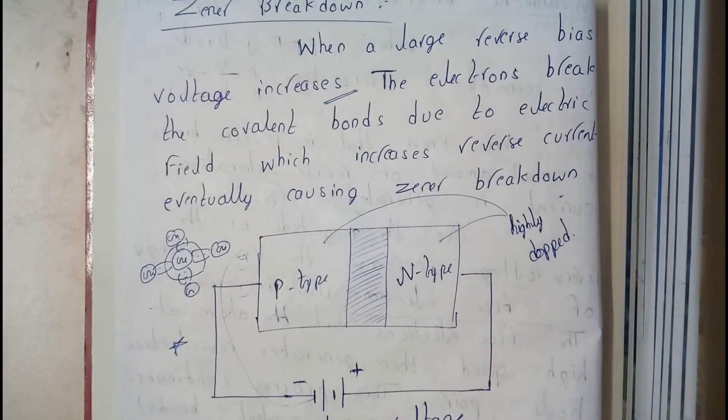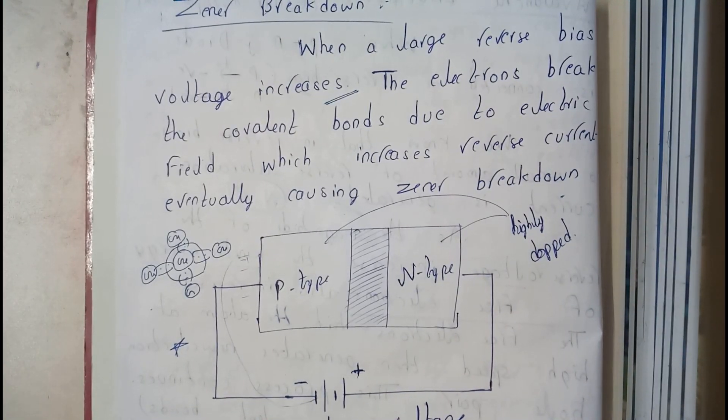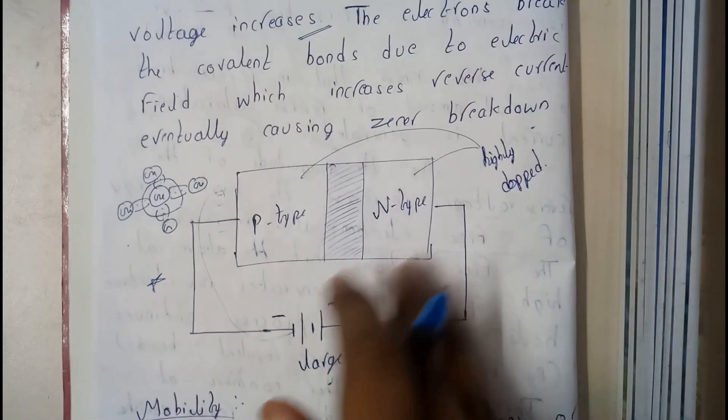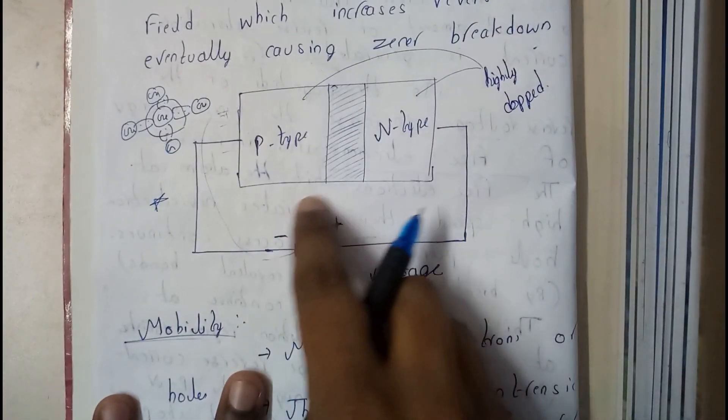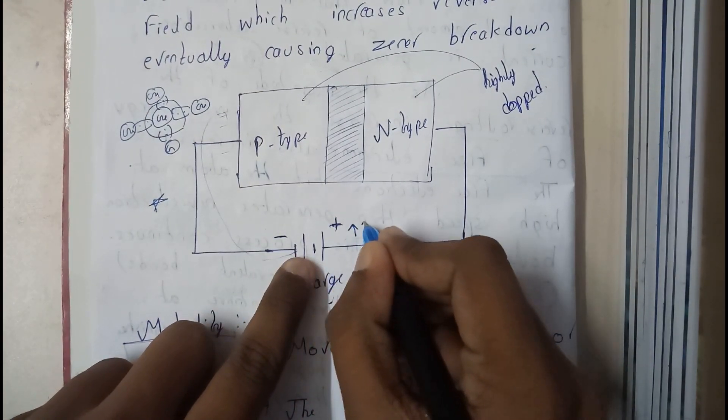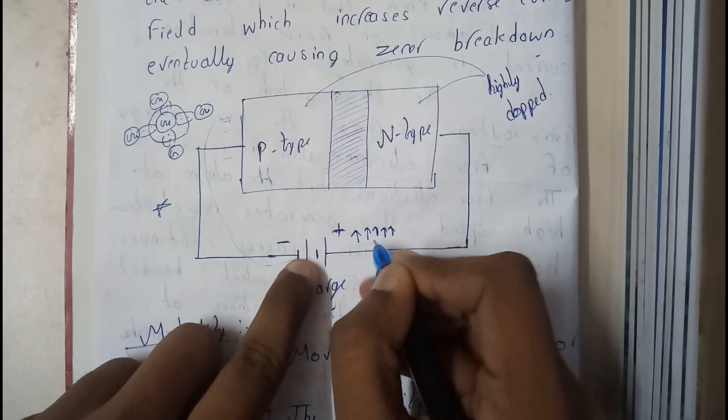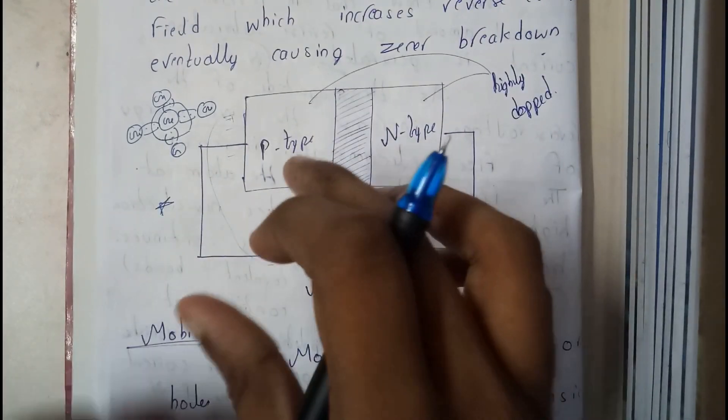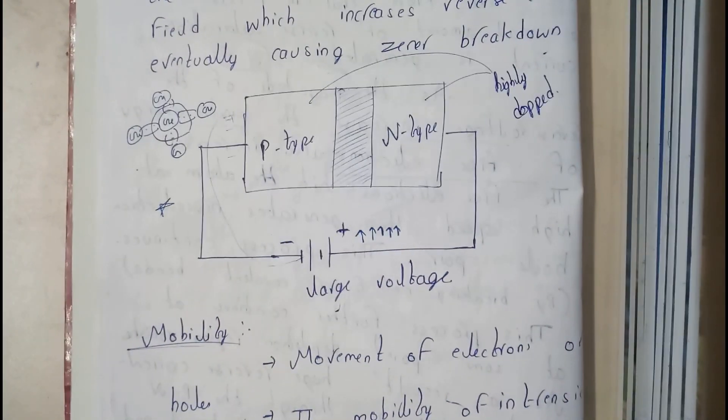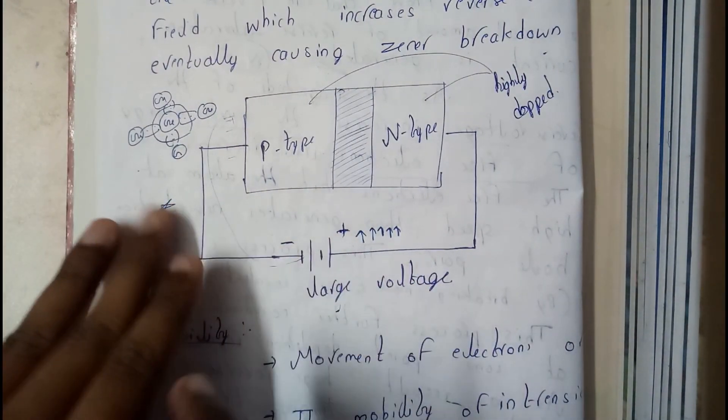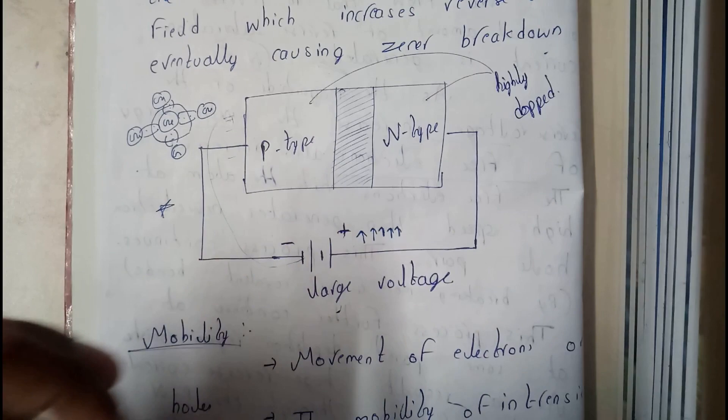Basically, let us go through what happens in Zener Breakdown. I told you that we'll be giving a negative supply, so if we rapidly increase the supply voltage or give a large amount of supply voltage, this voltage is going to break the covalent bonds in between the elements.